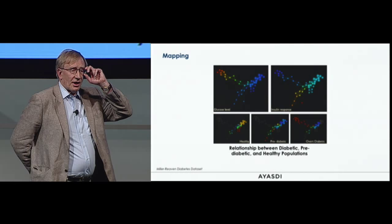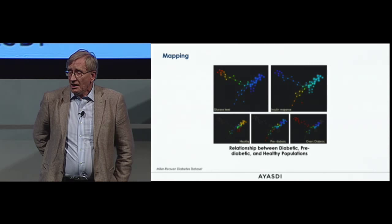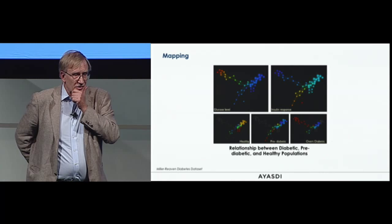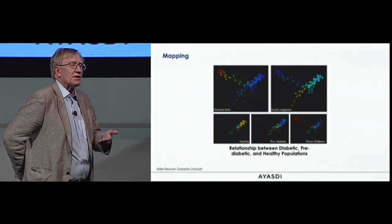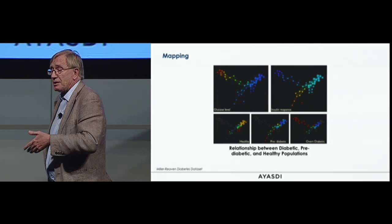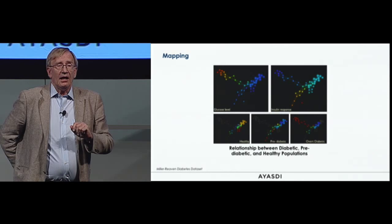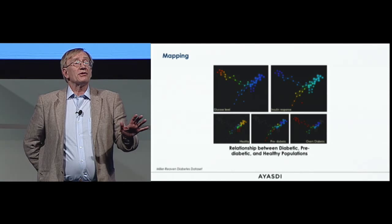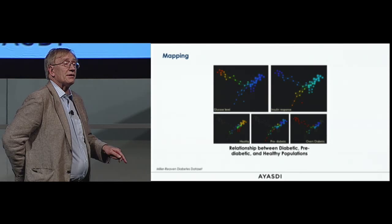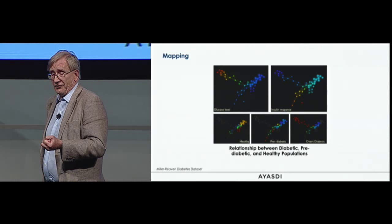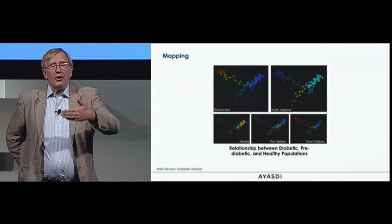Our first sanity check on this was a simple, small diabetes data set from Stanford some 40 years ago. The network is the same in all cases, colored by different variables, describing potential diabetes patients. There's one flare of overt diabetics, one flare of pre-diabetics, and one of healthy patients. You can create a taxonomy and generate hypotheses by looking at the network structure — finding explanatory variables: in one case blood sugar, in the other insulin response. This would be called unsupervised analysis.